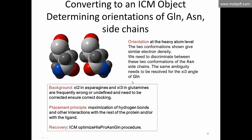Another problem involves glutamine and asparagine side chains. At the heavy atom level, two conformations give very similar electron density, so we need to discriminate between them. The same ambiguity needs to be resolved for the chi3 angle of glutamine as well. When converting to an ICM object, there is an option to optimize the hydrogen bonding network for the correct orientation of asparagines and glutamines.